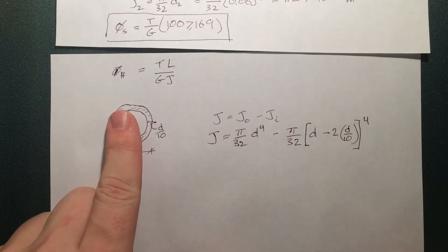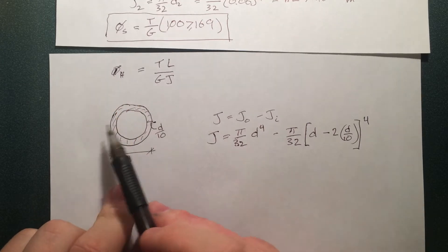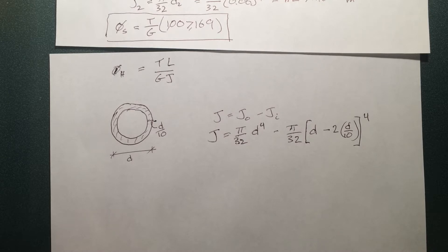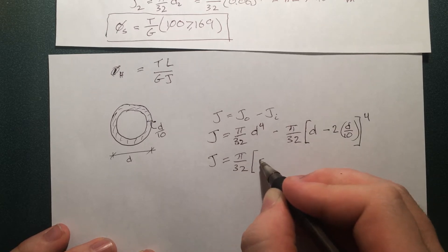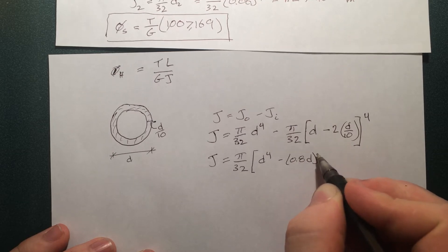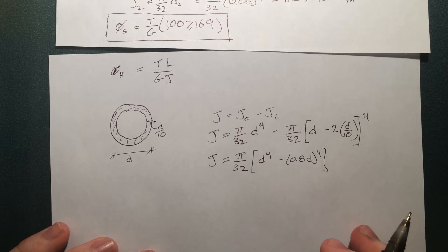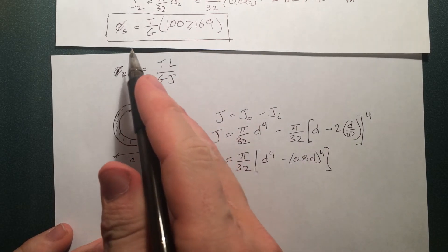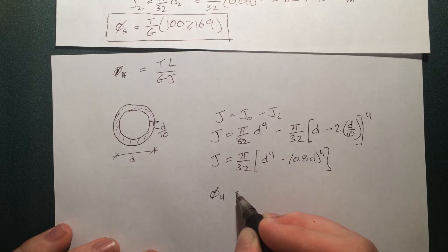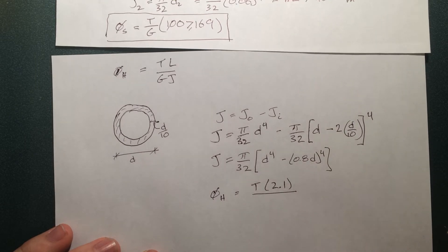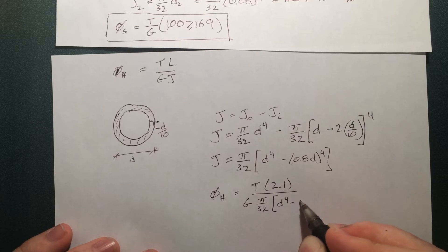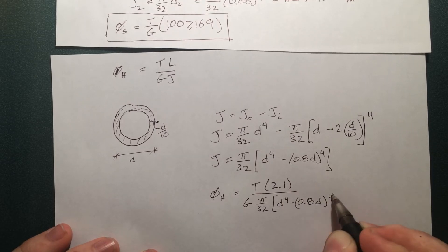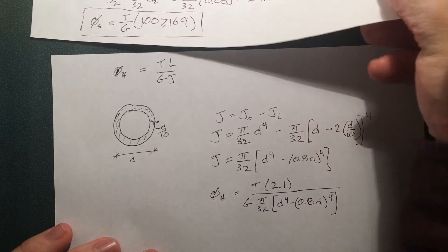Think about why that would be true because the radius would just be the thickness and we have two times the radius we got to time this by two. So moving along here you can see that's the one for the hollow and we can then put this back into phi for the hollow back and over there is equal to T L total length of that hollow piece was 2.1 G and then J.